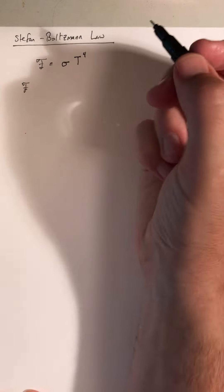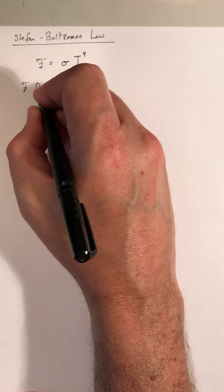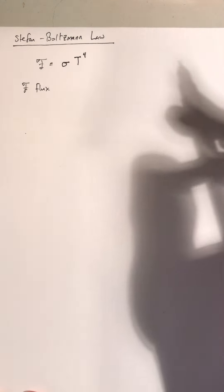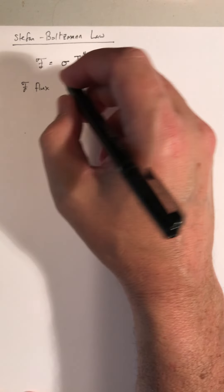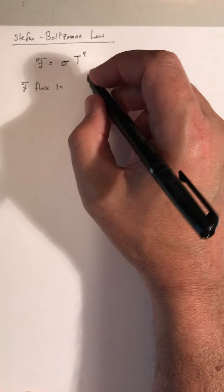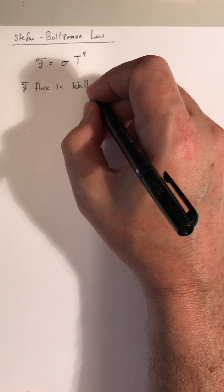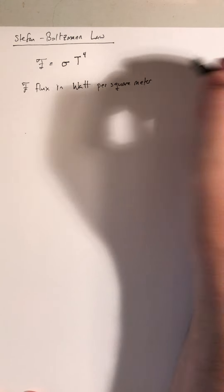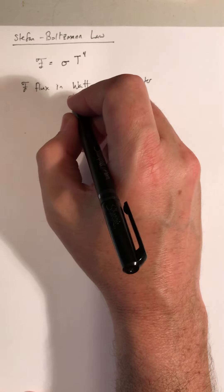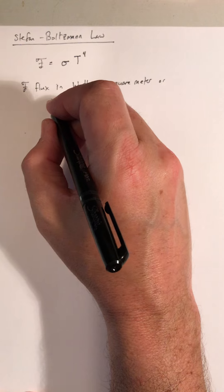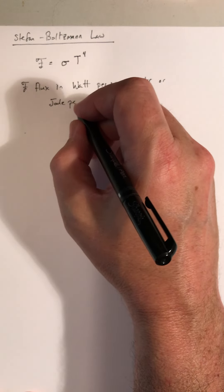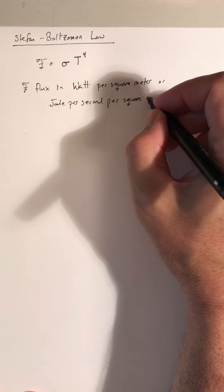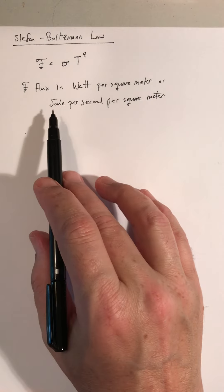My little cursive F thing is the flux, which is the power per square meter or energy per unit area per unit time. So that's the flux, and you can think of it as a unit of power, a watt per square meter of surface or joule per second per square meter of surface, because a watt is a joule per second.